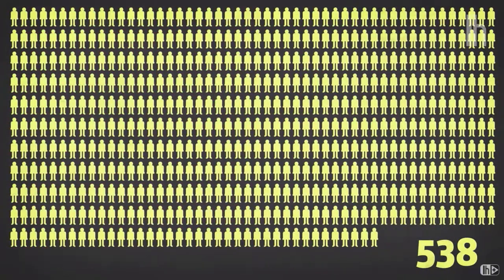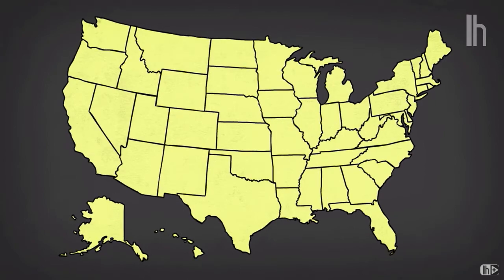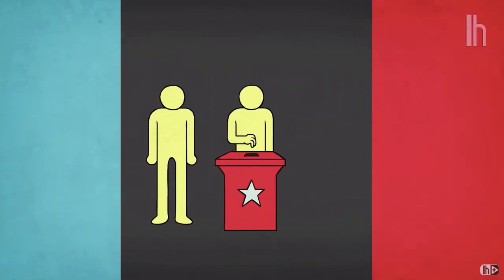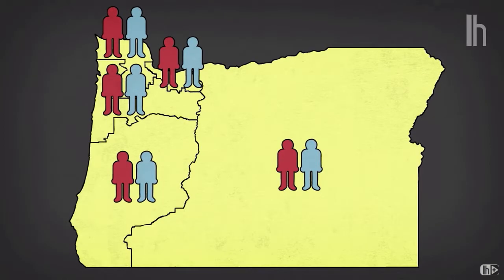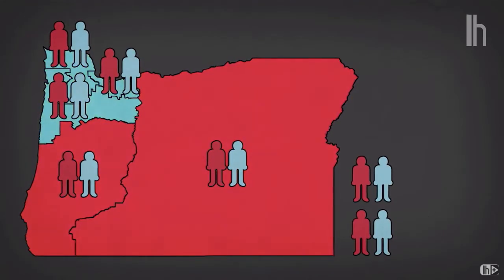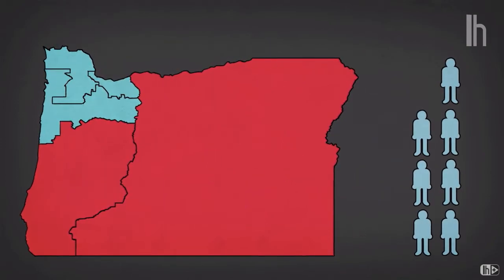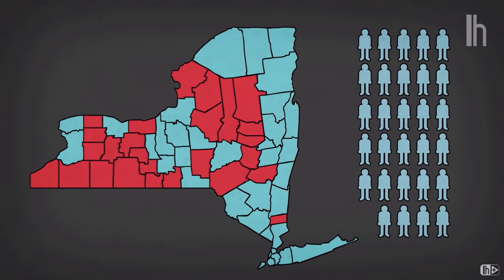Each political party has its own slate of electors — 538 Democrat electors, 538 Republican, 538 for the Green Party, and so on. The selection of electors is controlled by the political parties and varies state to state. When you place your vote in November, you aren't actually voting for the president — you're voting for an elector from your district representing the political party of your candidate. In all but two states, this is a winner-take-all system.